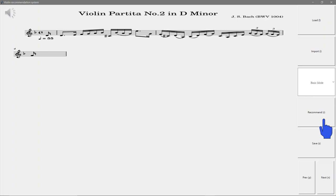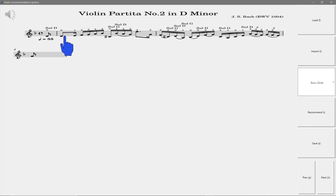Then, press the recommend button. The string and fingerings are then recommended and shown on the score. The beginning is the D string, from no fingering to the first finger. Then the G string is recommended for the C sharp note.